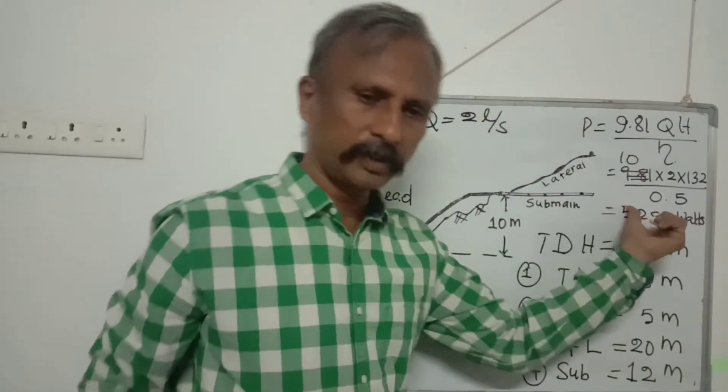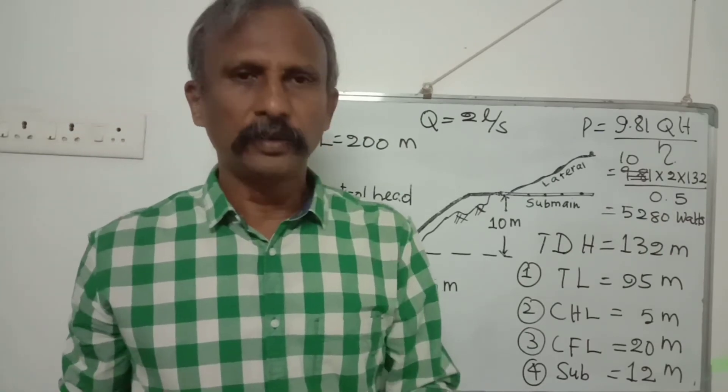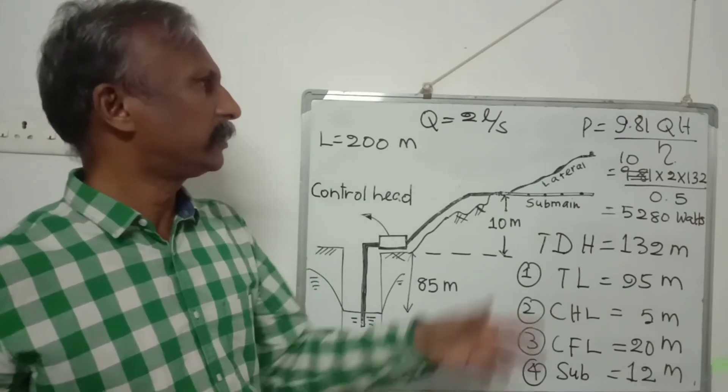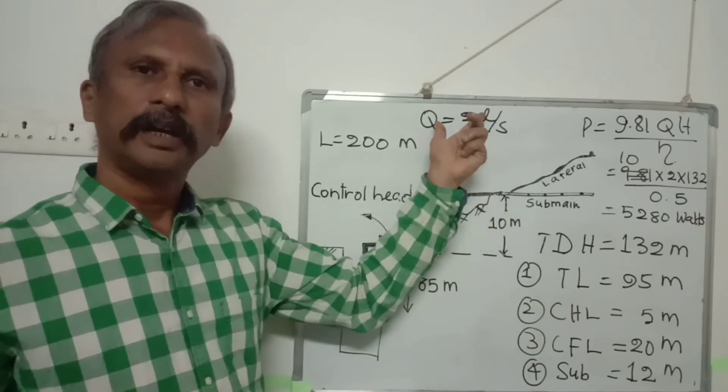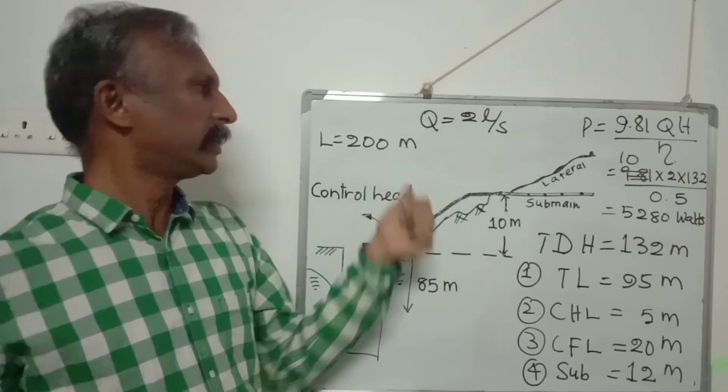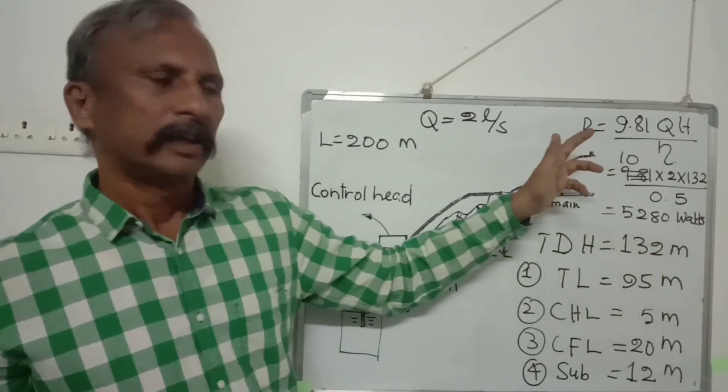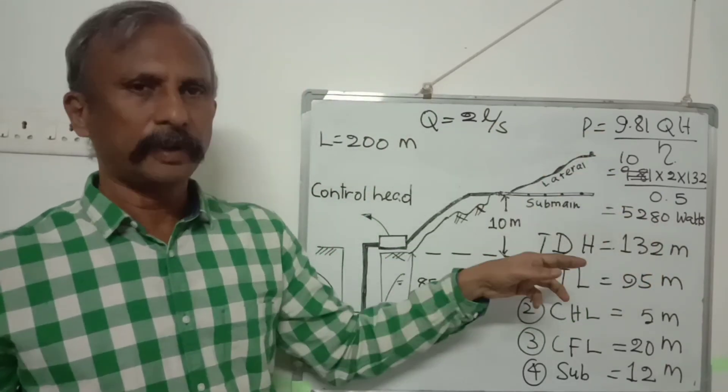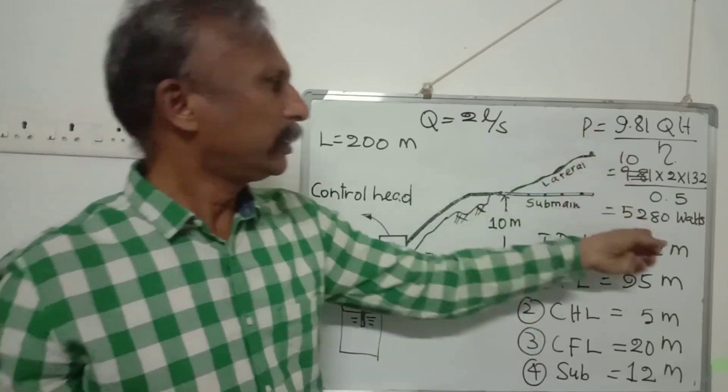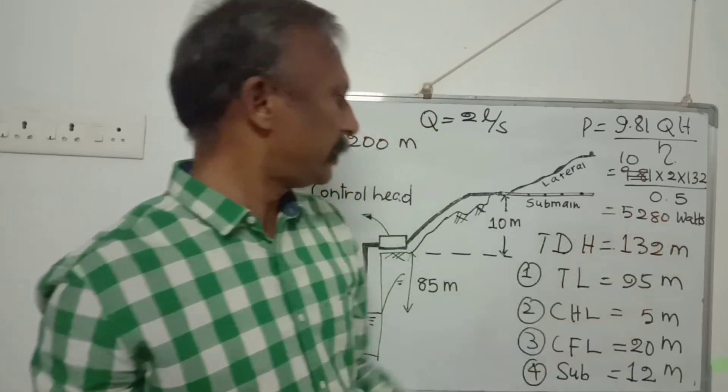So it is approximate only. When you go to market and look for purchasing the pump, you should specify that you need a pump which can deliver 2 liters per second at the pressure head of 132 meters. When you purchase that kind of pump, it will automatically have the power of the pump very near to 5.2 kilowatts.